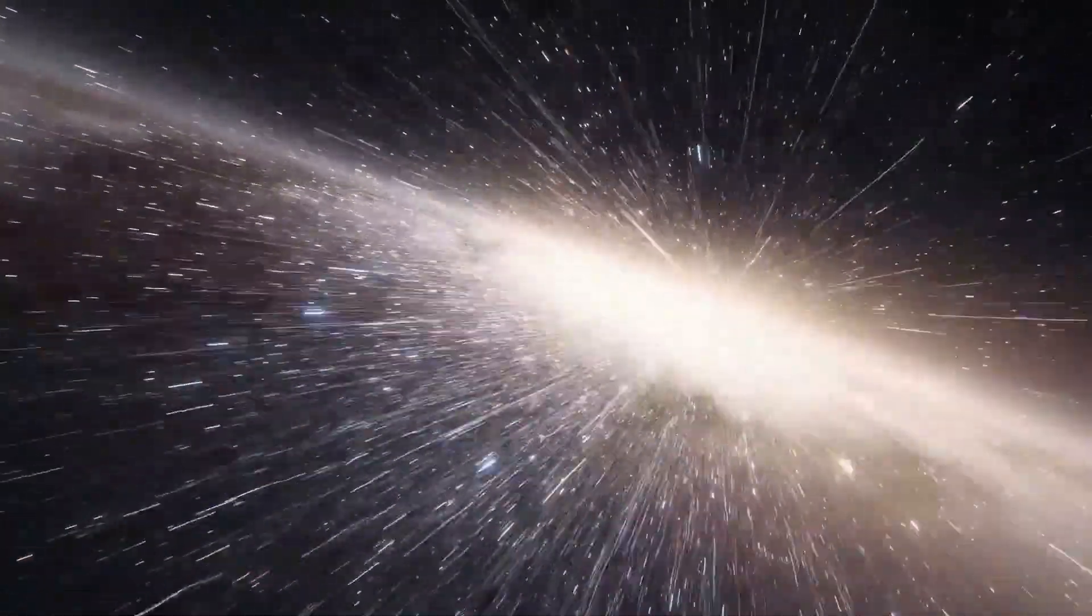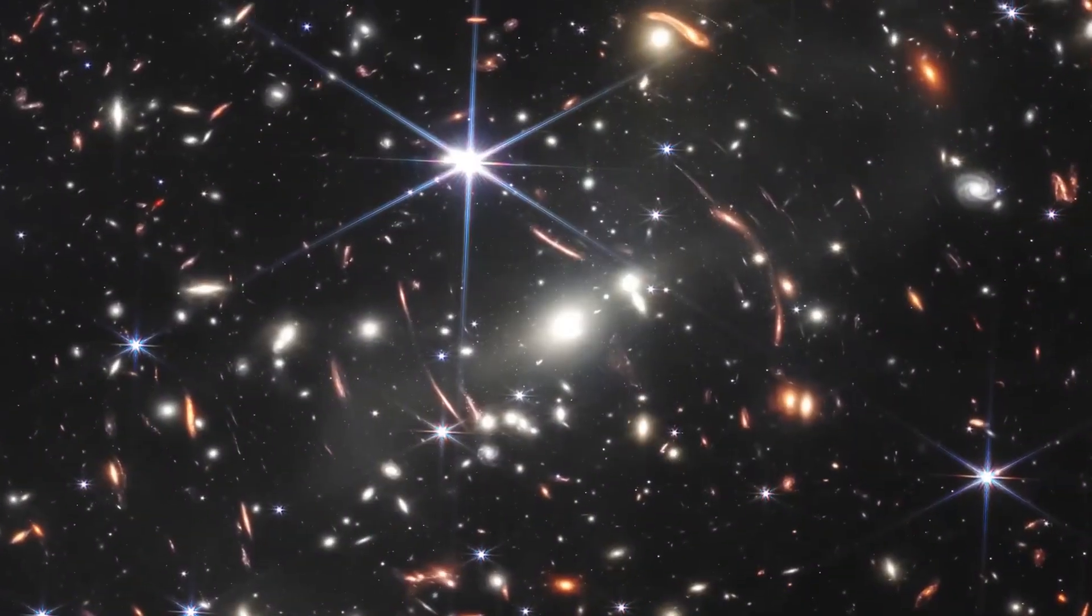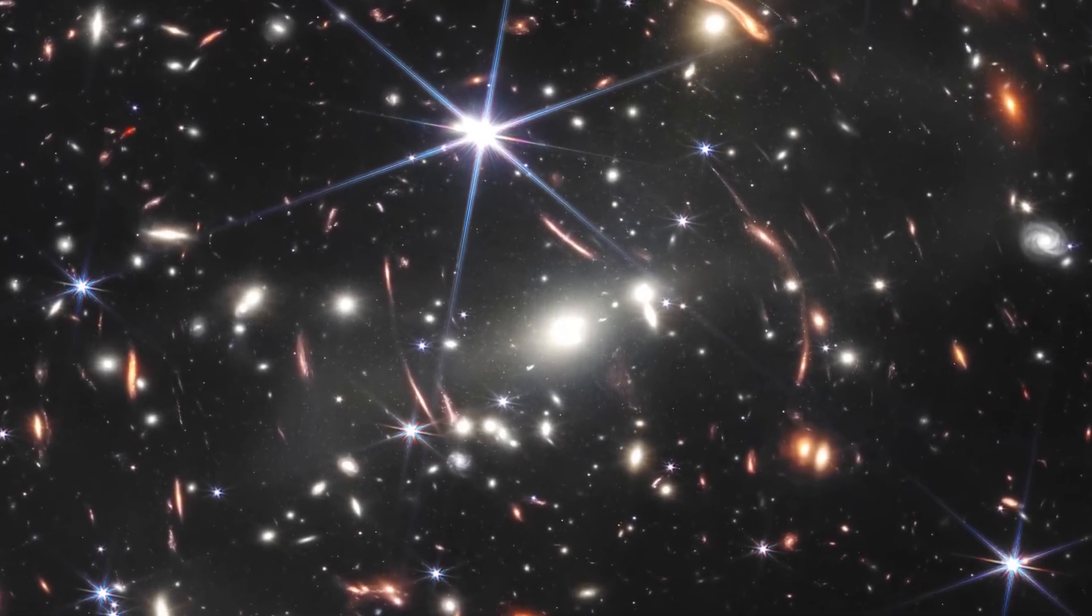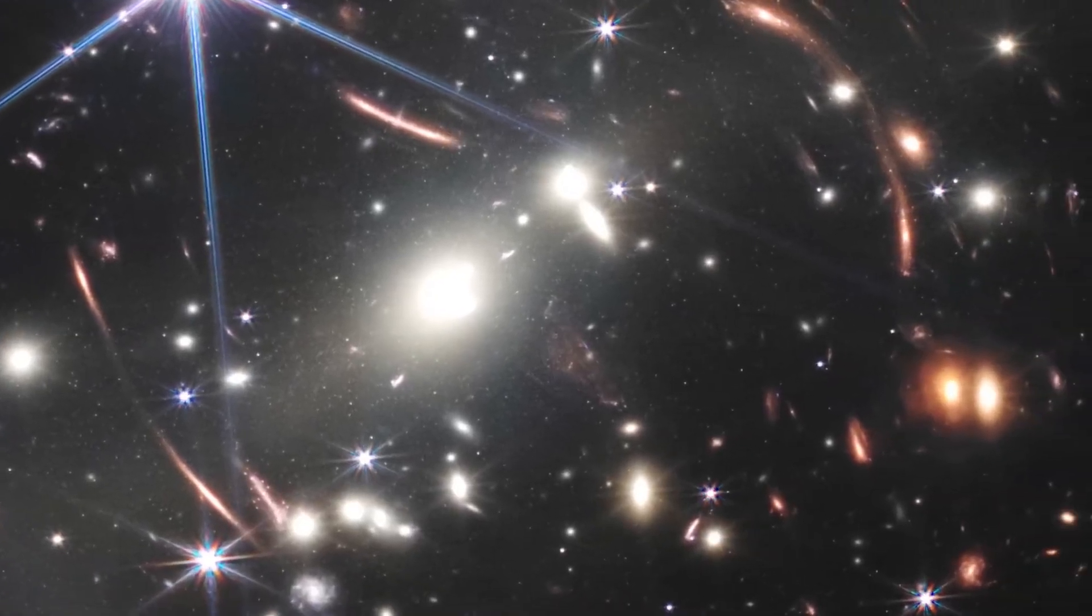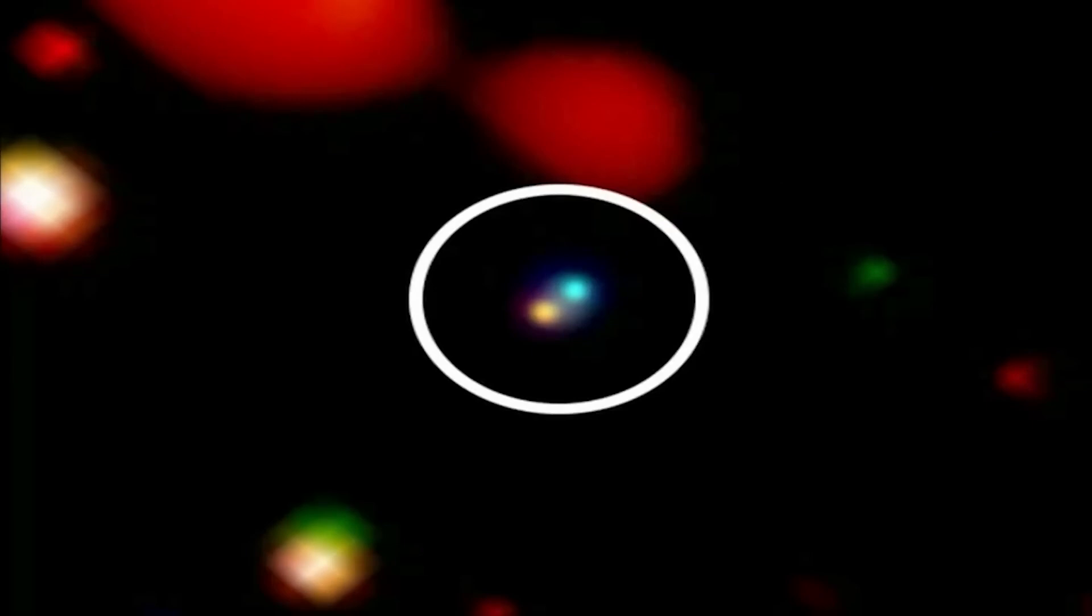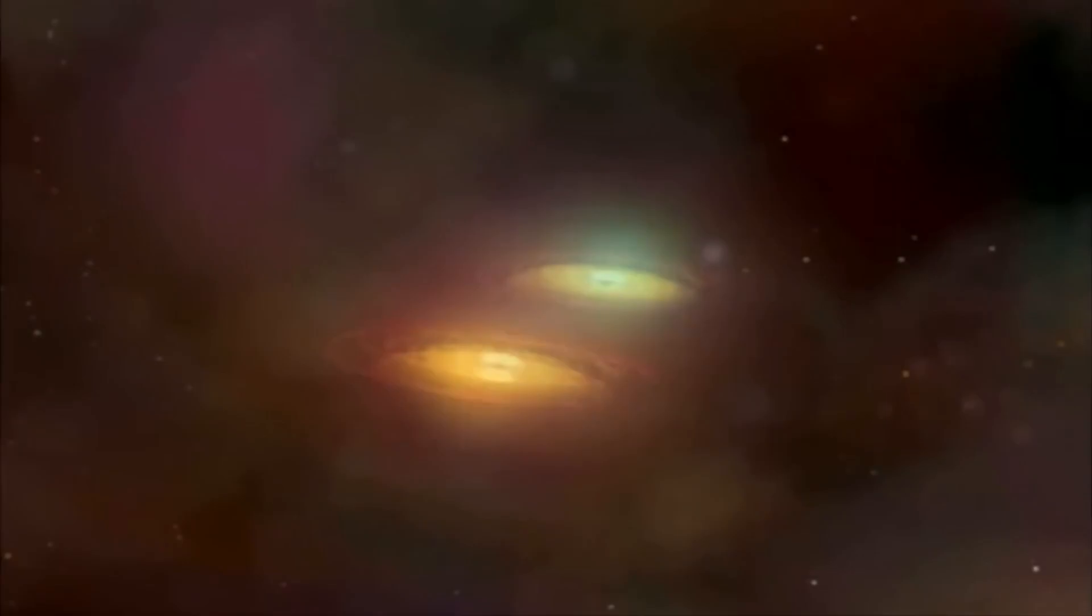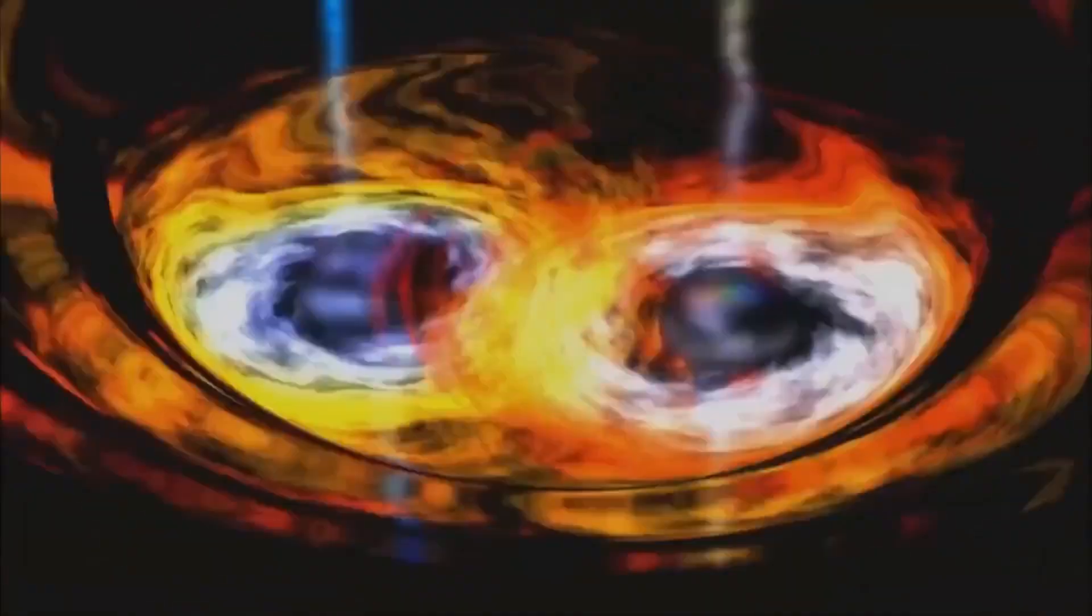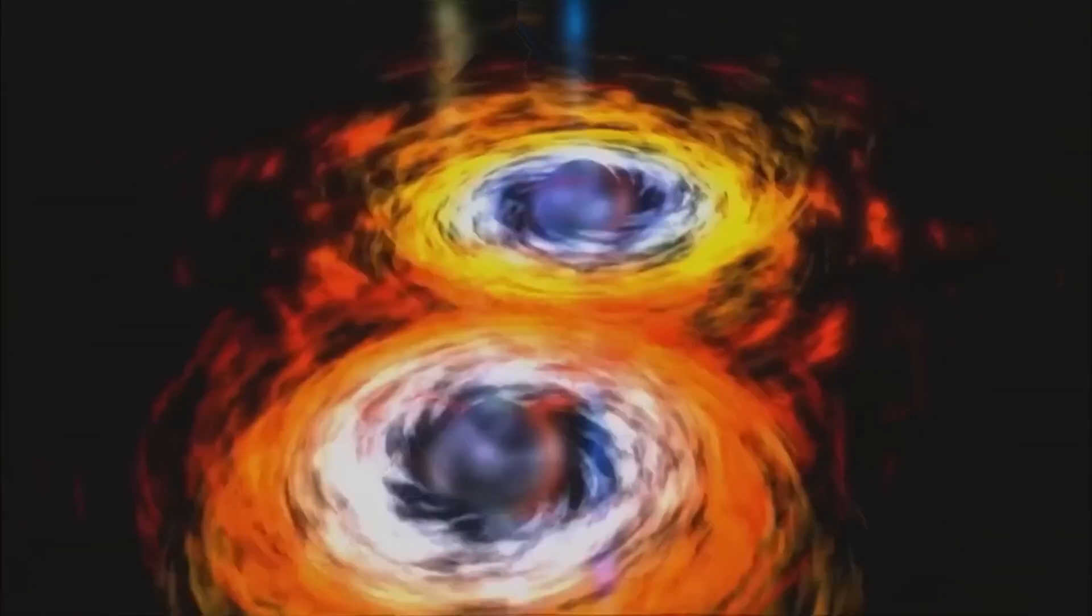Now, researchers can measure the velocities of these seven galaxies, which gives them the confidence to confirm that they are bound together in a proto-cluster. To put this in perspective, NASA scientists compared these distant galaxies to small drops of water in different rivers, that will eventually join together to form a large and powerful river.